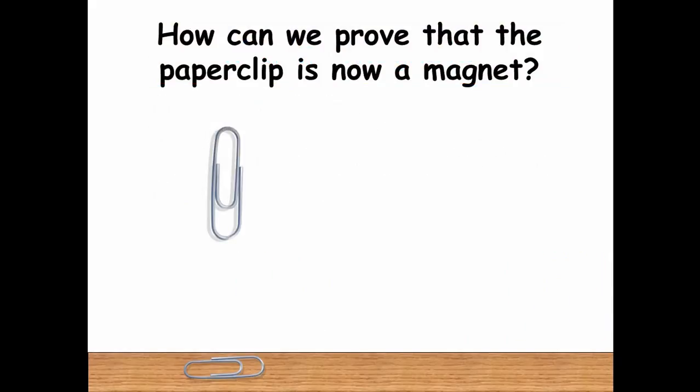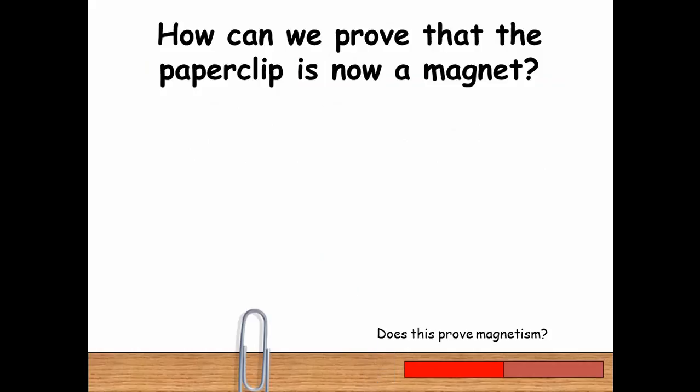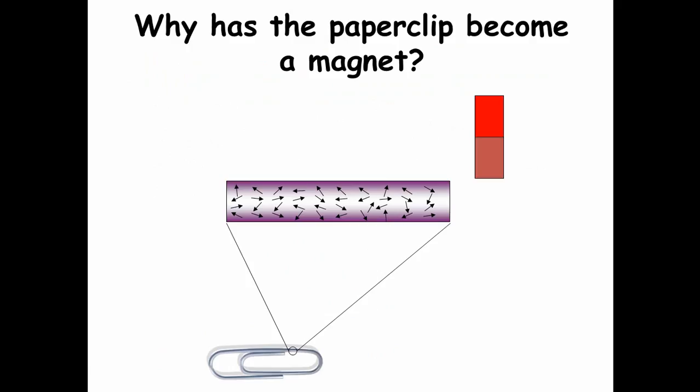So how can we prove that the paper clip is now a magnet? Well, it should attract other magnetic materials, but also it should repel from a magnet.